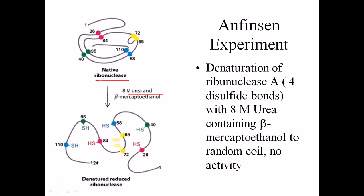He added 8 molar urea along with beta-mercaptoethanol — these are the disrupting agents. Beta-mercaptoethanol is going to disrupt the disulfide linkages among the protein subunits, domains, and motifs. Urea is going to disrupt the other hydrogen bonds of the protein structure. After addition of all these agents, the native protein gets denatured.